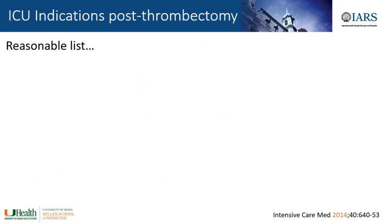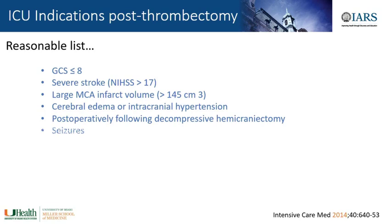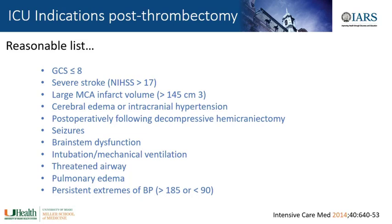A reasonable list of ICU indications post-thrombectomy includes: GCS less than or equal to 8, severe stroke defined as NIHSS greater than 17, large MCA infarct volume suggesting a malignant course greater than 145 centimeters cubed, cerebral edema or intracranial hypertension, post-op following decompressive hemicraniectomy, seizures, brainstem dysfunction, intubation or mechanical ventilation, a threatened airway, pulmonary edema, and — probably the most common indication — persistent extremes of blood pressure greater than 185 or less than 90 systolic.